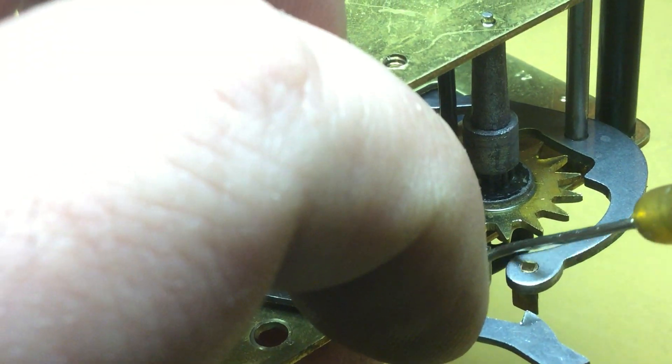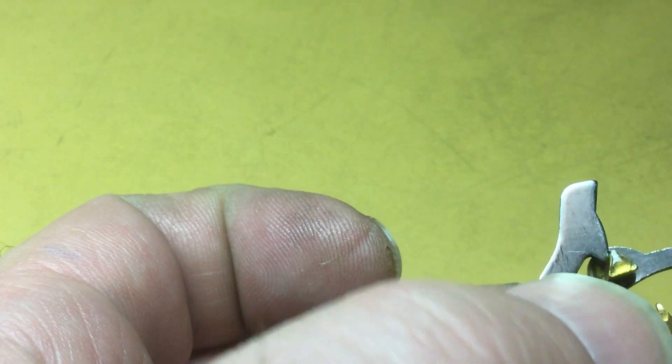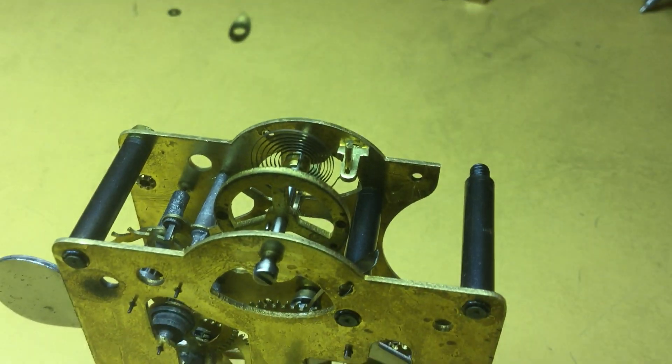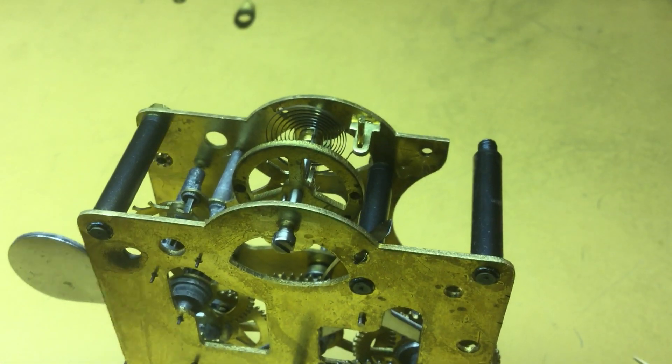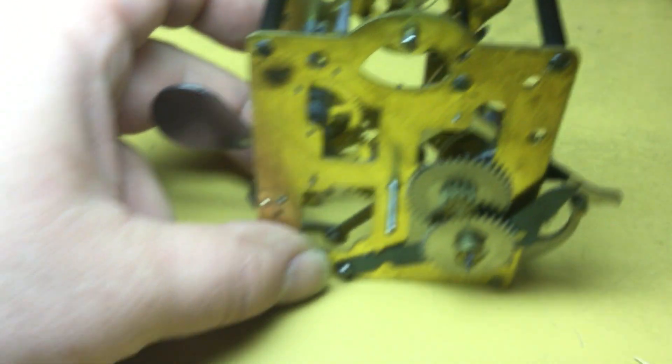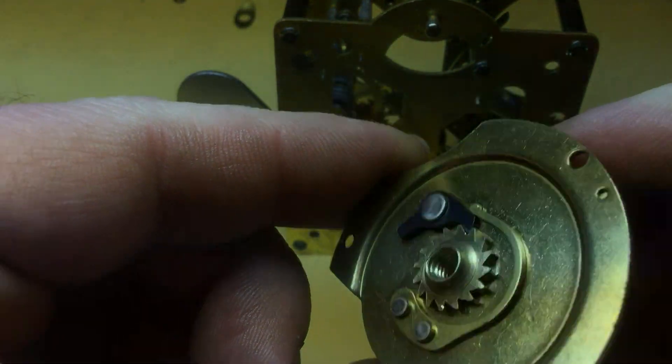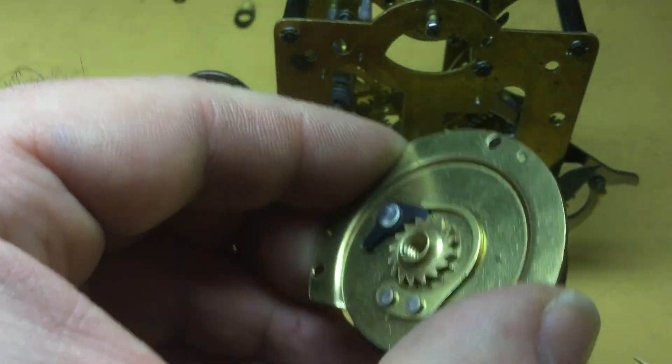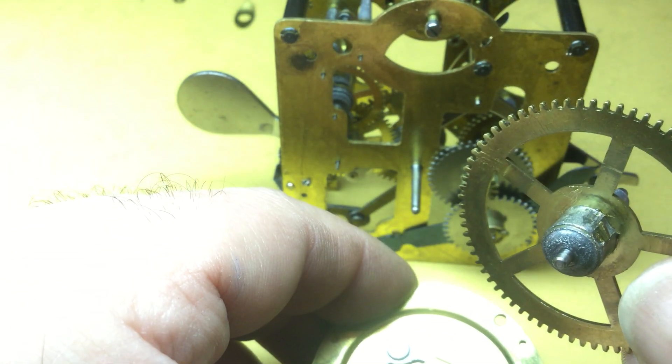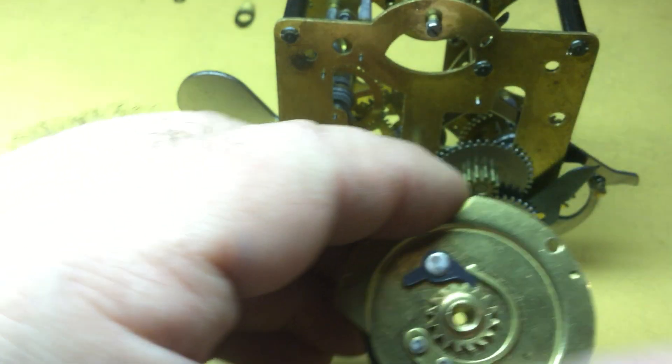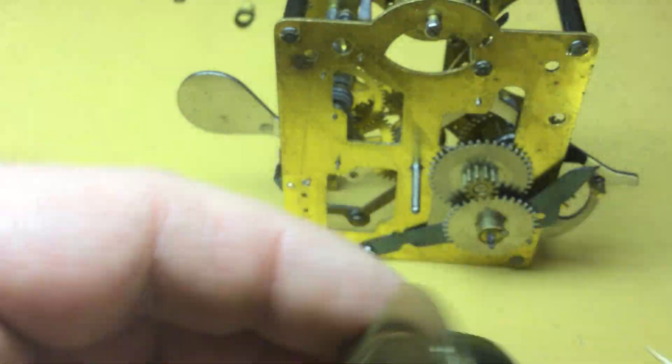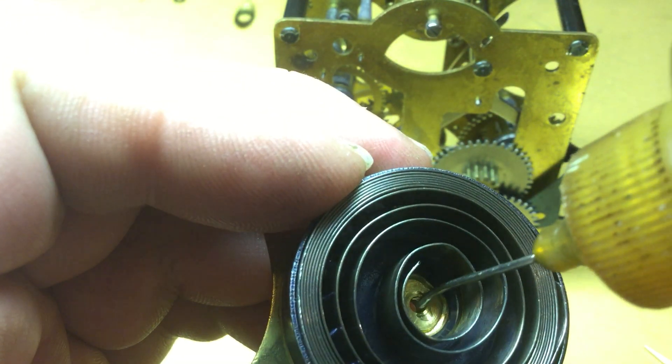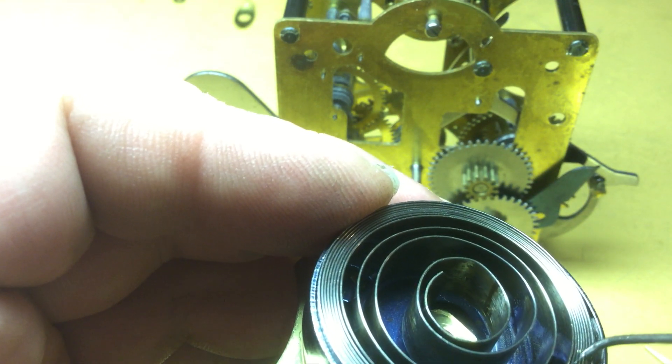I'm also going to put a thin smear of oil on this edge of the spring here. Just wet it down. Next, I think you saw me in another video already put a little bit of oil on the click. There's a really neat thing about these Westclox great wheels for the time side is the back bearing, pivot bearing for the great wheel is actually in the center there.